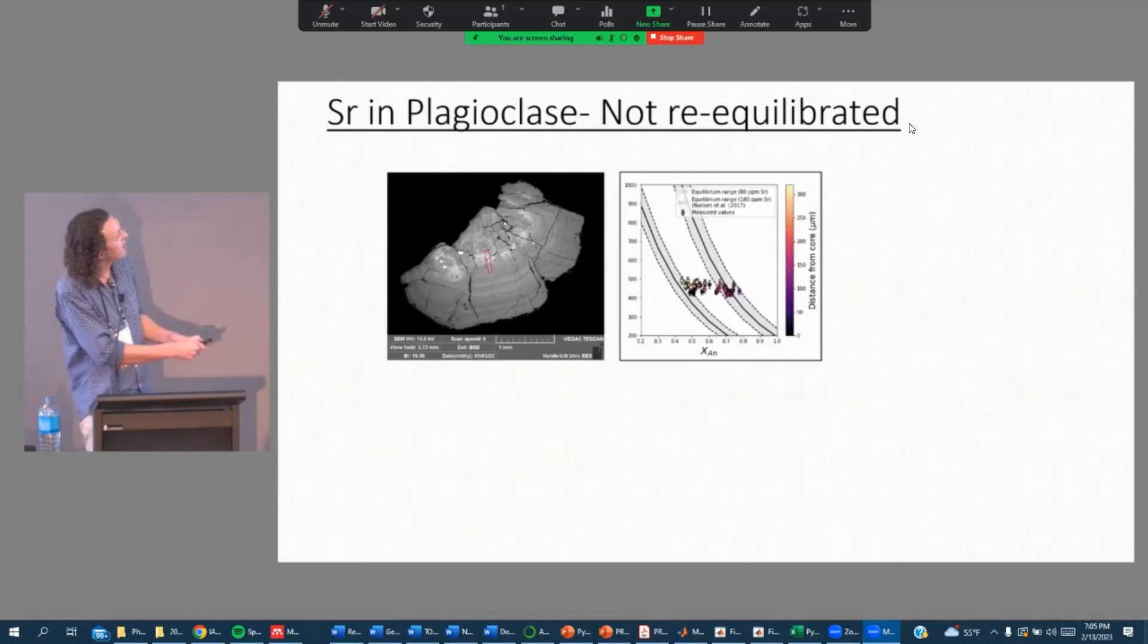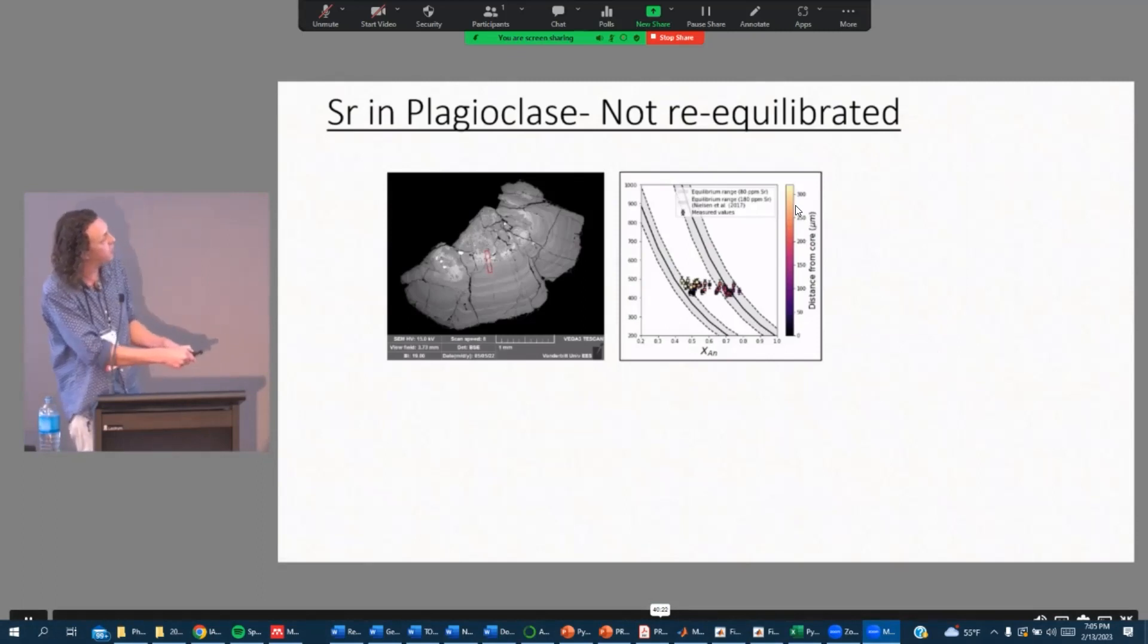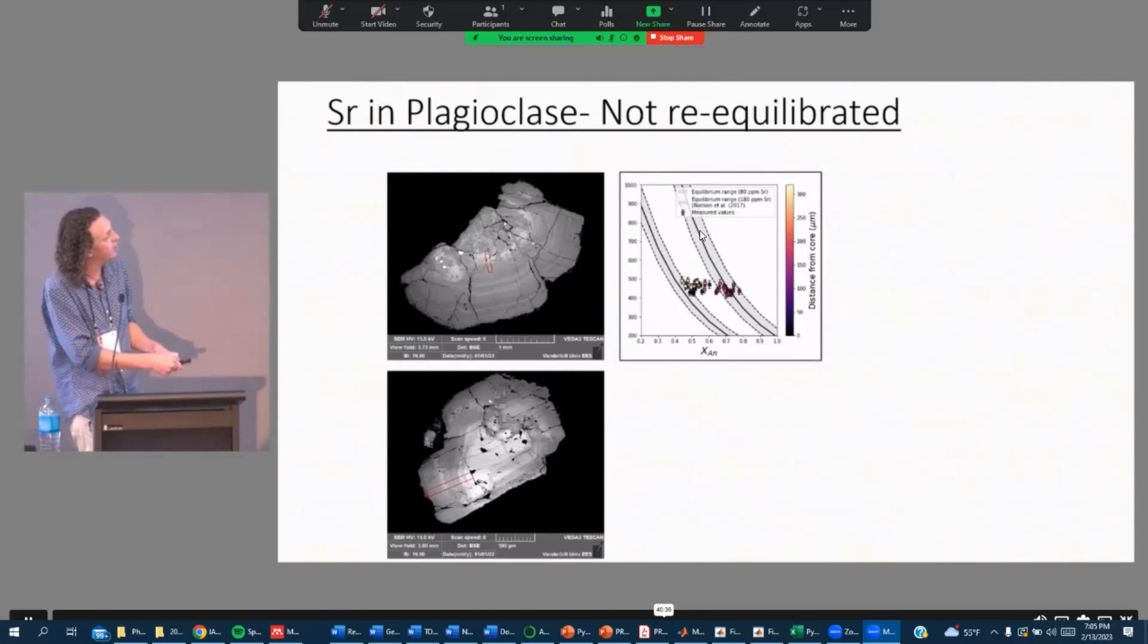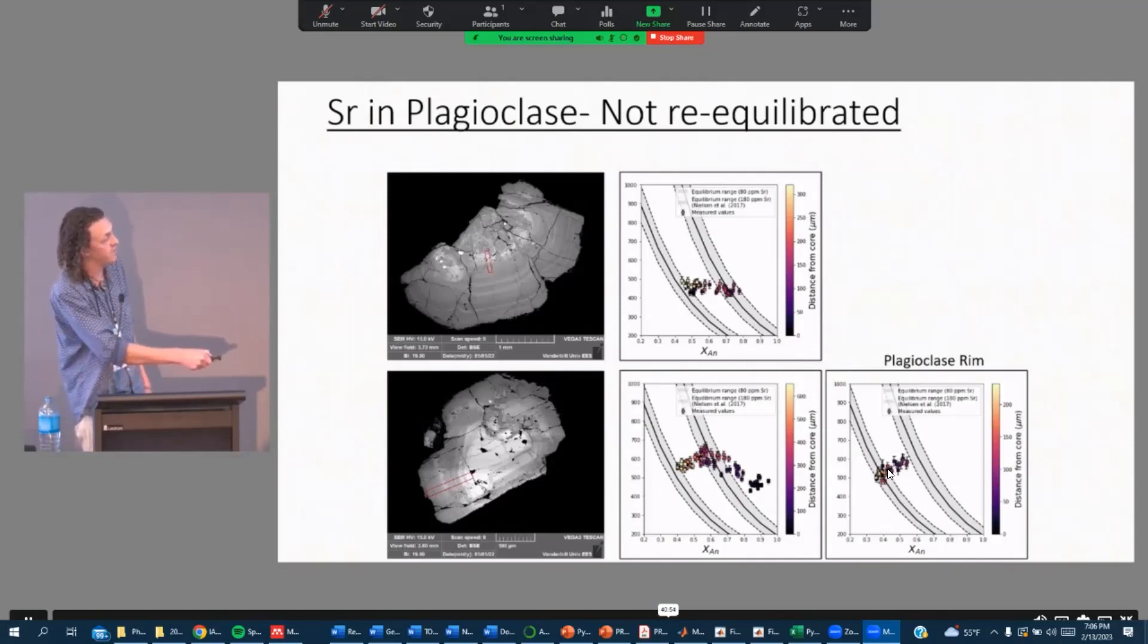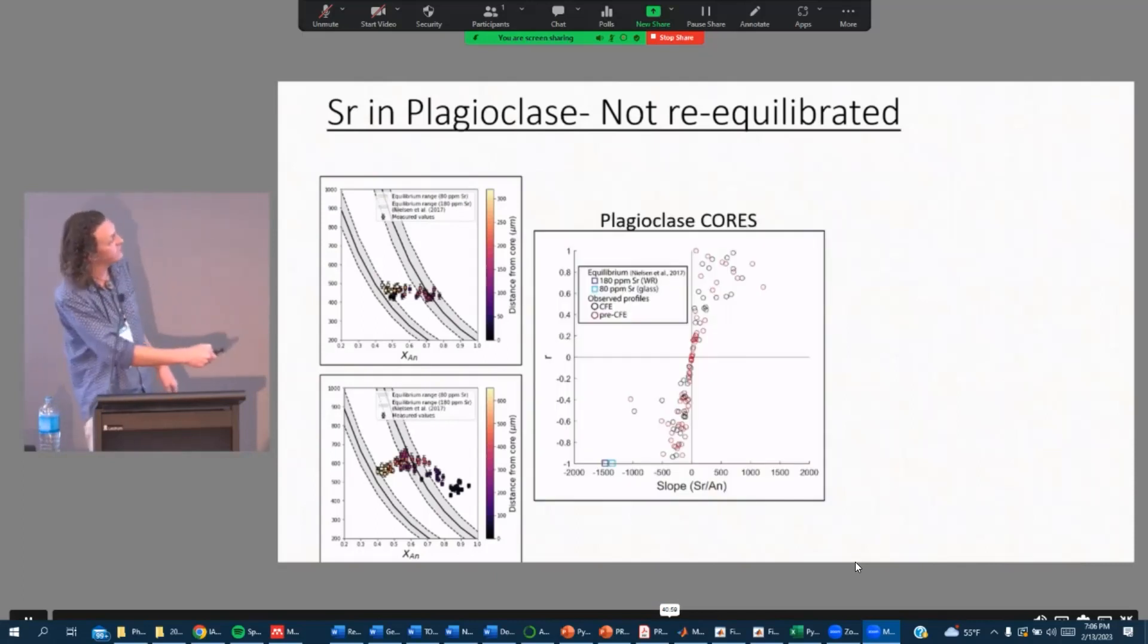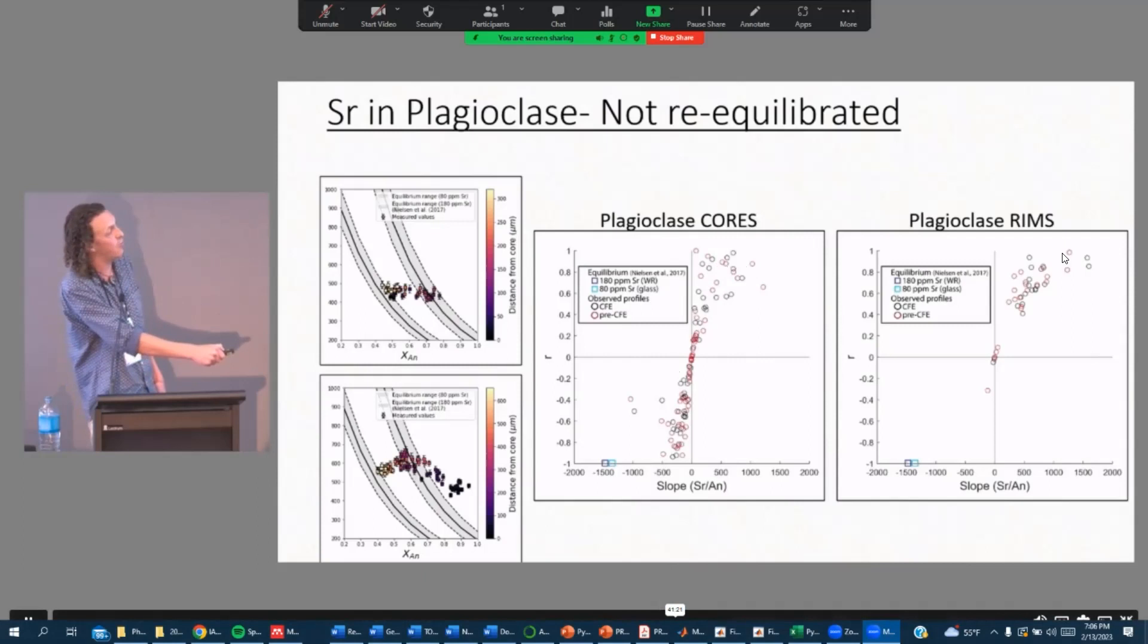So then if we plot here we have strontium versus anorthite content and color coded from distance from the core. You can see that there's a slight negative correlation, but it's not nearly steep enough to be at the equilibrium predicted by the 80 parts per million content in the glass or the 180 parts per million expected by the whole rock. Here's an interesting case where going from the core we have this negative correlation here, but again not in equilibrium for the core. And then for the rim we have this positive correlation indicating significant differences in the amount of time for diffusion. And for all of the plagioclase rims we kind of see this positive correlation.